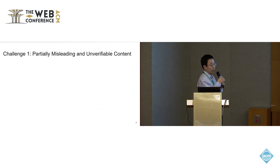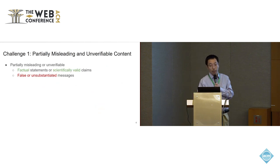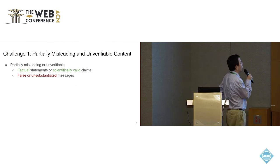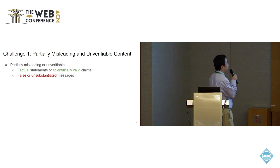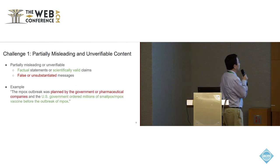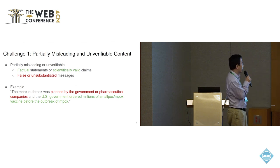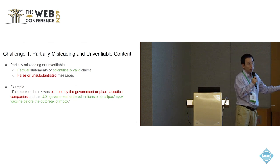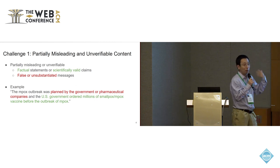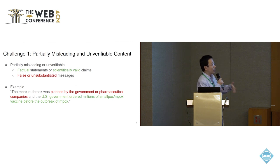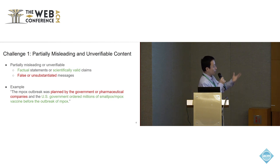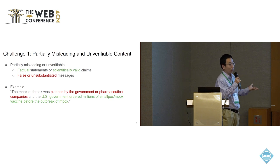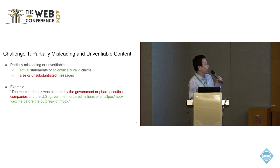To address our problem, there are two key challenges. The first is partially misleading or unverified content. For example, a post during the monkeypox outbreak had a first half that was false and a second half that was true — the U.S. government did stockpile vaccines, but not because they wanted to launch an attack. This kind of mixed claim is especially confusing because people may believe the false part after accepting the true part.